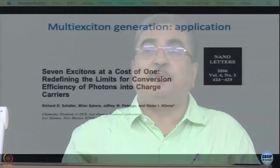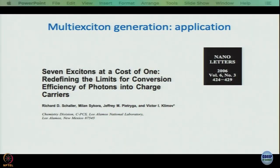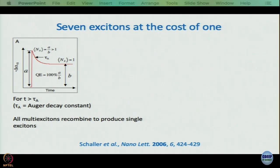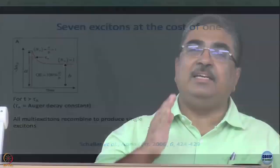This is where we stopped: 7 excitons at the cost of 1. Now we want to know how they knew they had done it. They knew it from transient absorption data, and to understand what they did, it is instructive to follow the schematic presented in their paper. What they say is this: as we saw earlier, in about 200 picoseconds or so, the hot excitons have cooled down.